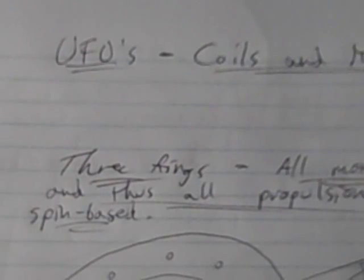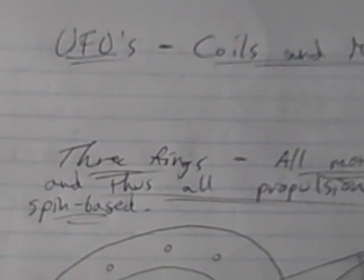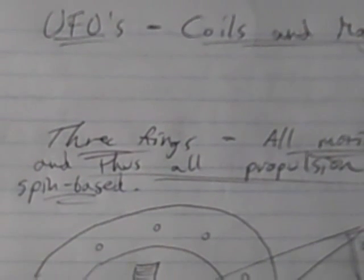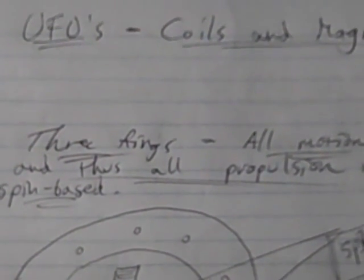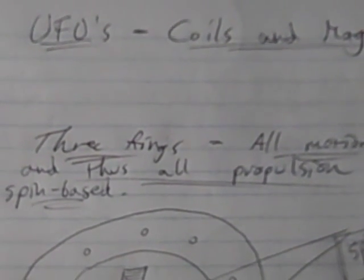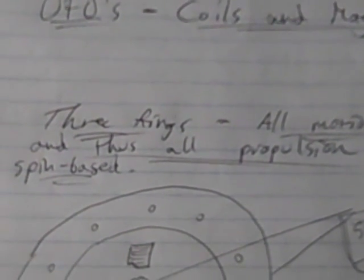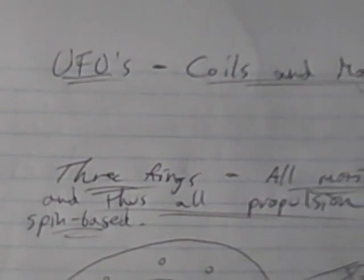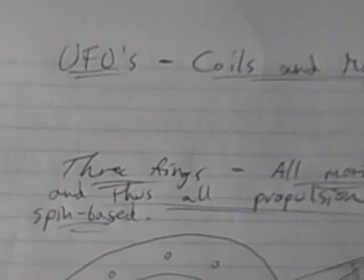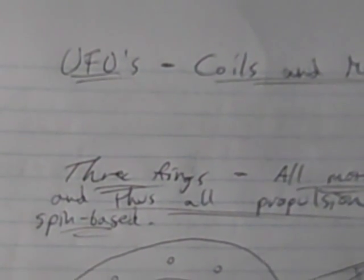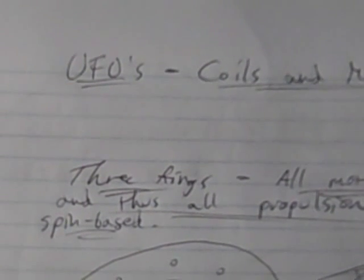But the more I've come to understand how reality works, the more I've concluded that not only are these things, UFOs specifically and other technologies, possible, but with Tesla's development of science and technology, they were just inevitable.